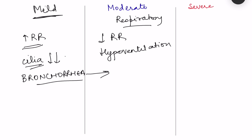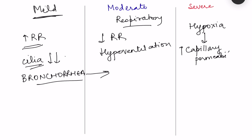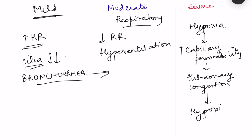In severe stage, there is hypoxia and decreased oxygen delivery to tissues. Though tissue oxygen requirement is also decreased due to decreased functioning, respiratory depression exaggerates hypoxia. Decreased oxygen delivery to tissues leads to increase in capillary permeability, resulting in pulmonary congestion and edema. This further impairs oxygen diffusion, worsening hypoxia — another positive feedback loop.